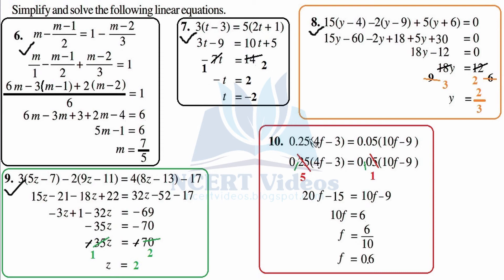Never dive into the question straight away — first visualize what you can do to solve it easily. Observe that 0.25 and 0.05 both have two decimal places on each side, so dividing gives over 100 on both sides, which we can straight away cancel. This is shown colour coded in green. What we are left with in our mind is 25 and 5 only. These can be further cancelled — shown in red — since 1 times 5 is 5 and 5 times 5 is 25. So we are left with 5 getting multiplied with (4f minus 3) equals 1 getting multiplied with (10f minus 9). Multiplying by 1 means the term stays as it is.